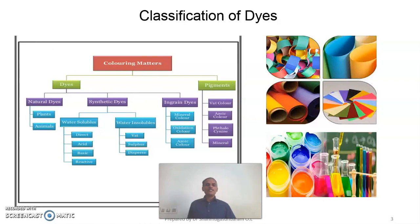Now let us see the classification of dyes. Colouring matters are classified into two categories: one is dyes, and the second one is pigment. Under the dyes, it is further classified into two types: one is natural dye and the second one is synthetic dyes. Under the synthetic dyes, it is further classified into two categories: one is water-soluble dye and the second one is water-insoluble dye.